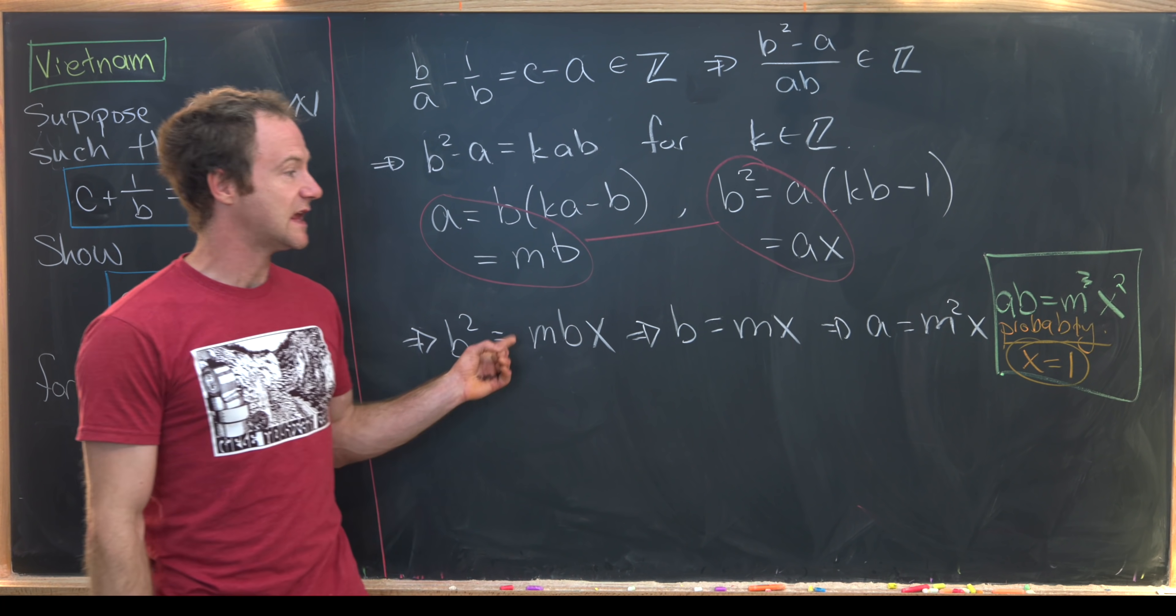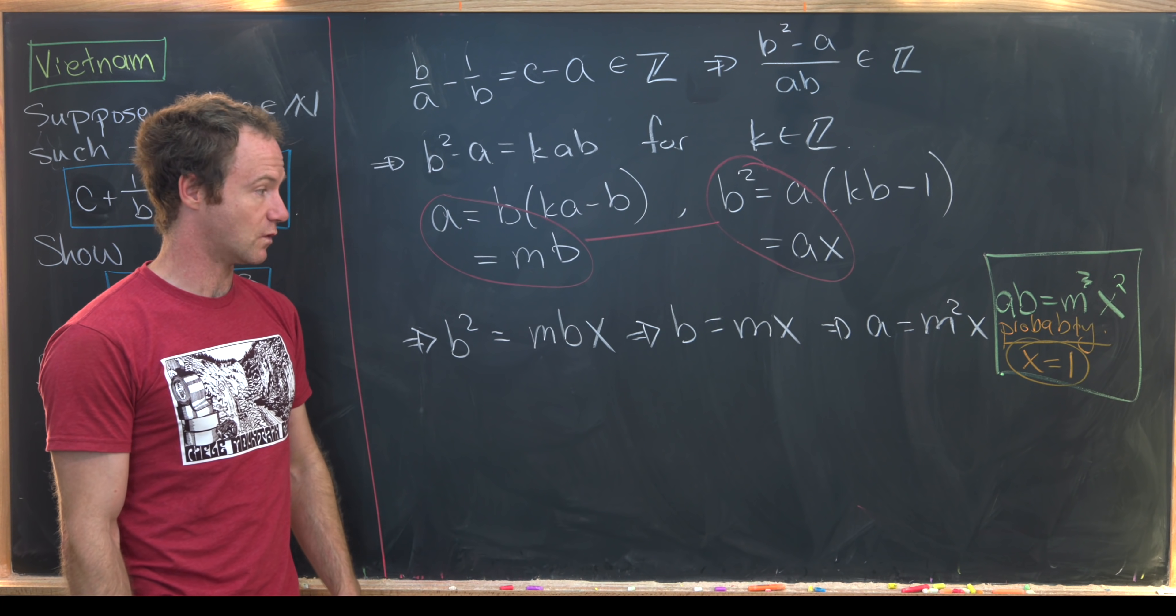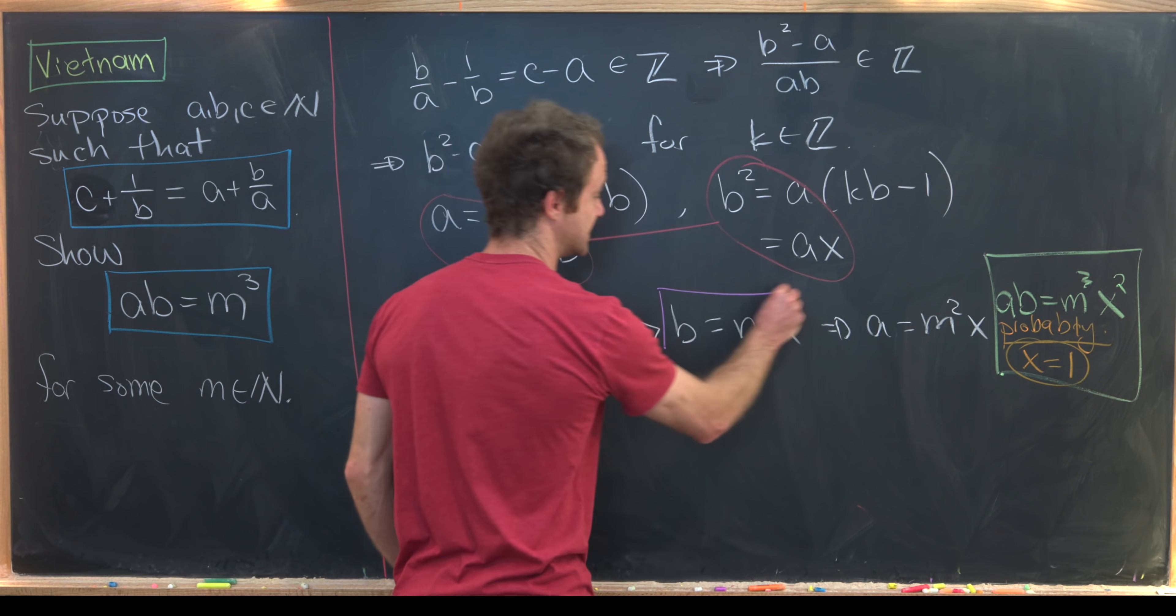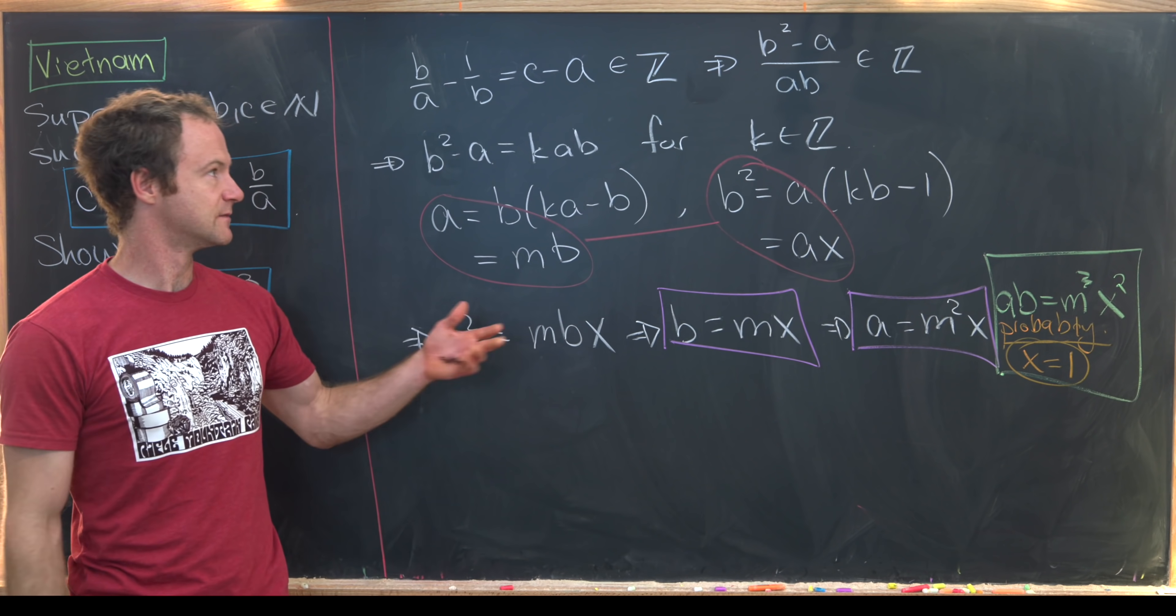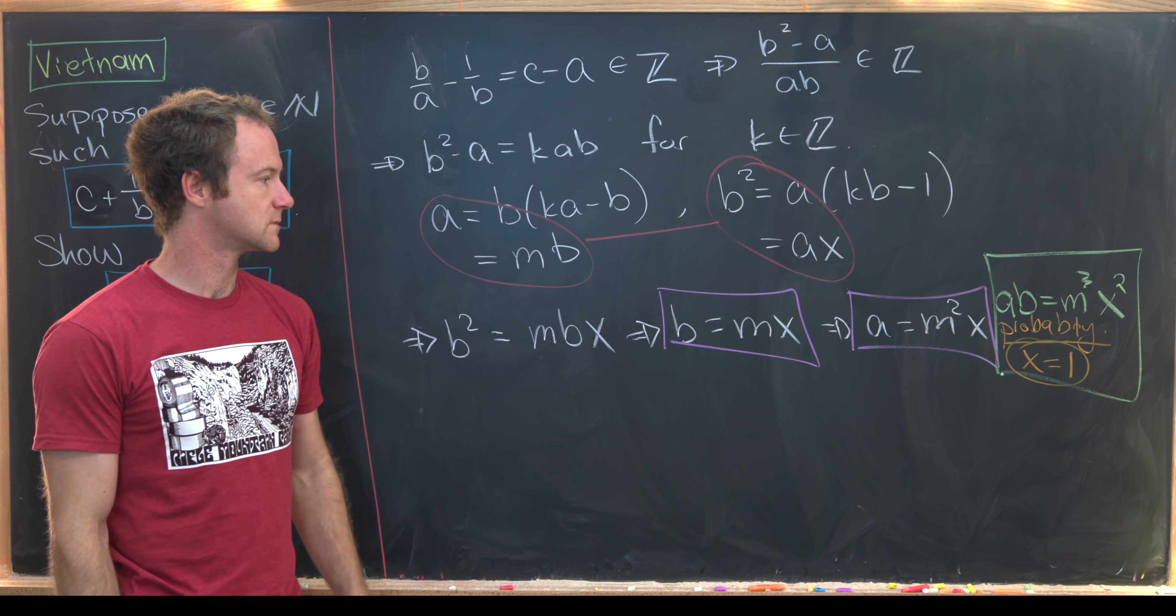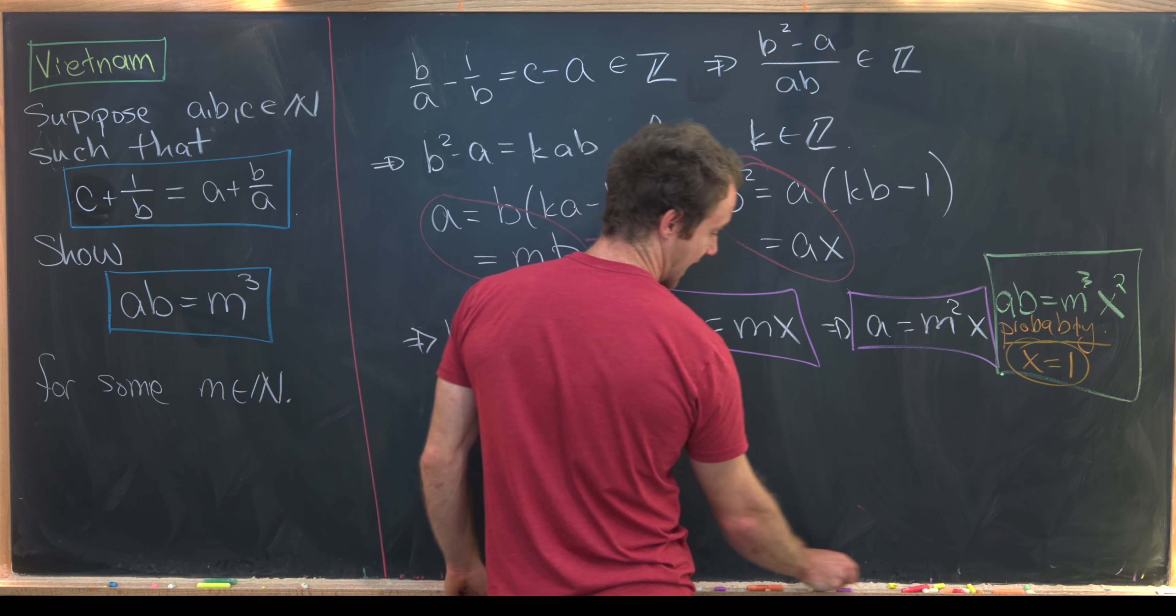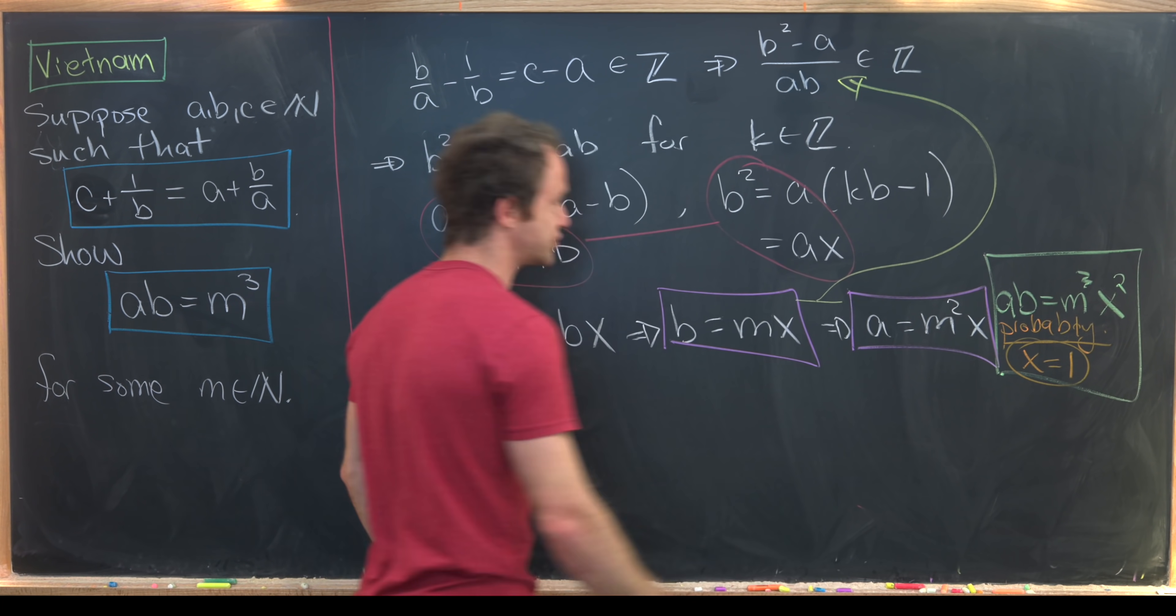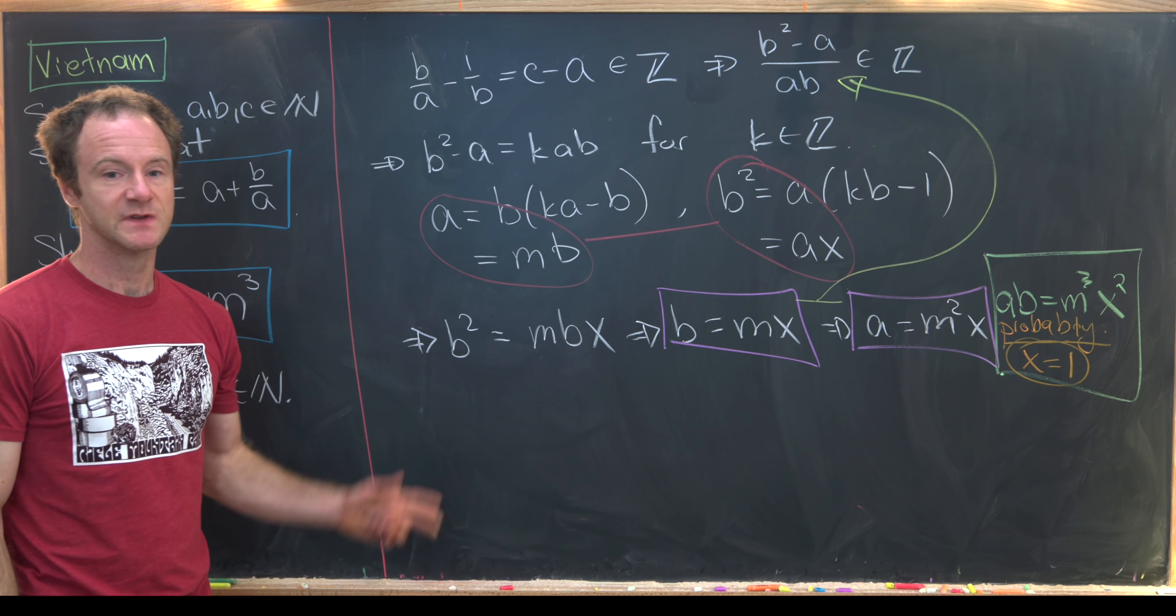Okay, so now let's keep that in mind that we're probably going to get back to the place where X is equal to one and use what we know for sure, which is B is equal to MX, A is equal to M squared X, along with some of our previous work to finish this off.